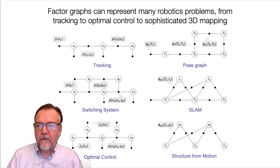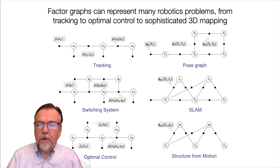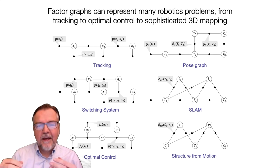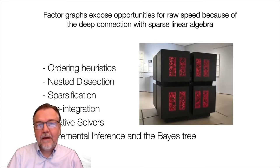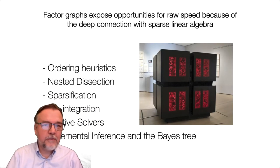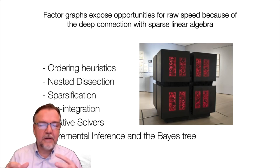There are also more complicated factor graphs shown here: a pose graph, a SLAM graph, and a structure-from-motion graph, where we reason about the trajectory of the robot at the same time as thinking about the environment. Working with factor graphs really exposes opportunities for exploiting computational efficiency because of the deep connection between factor graphs and sparse linear algebra.